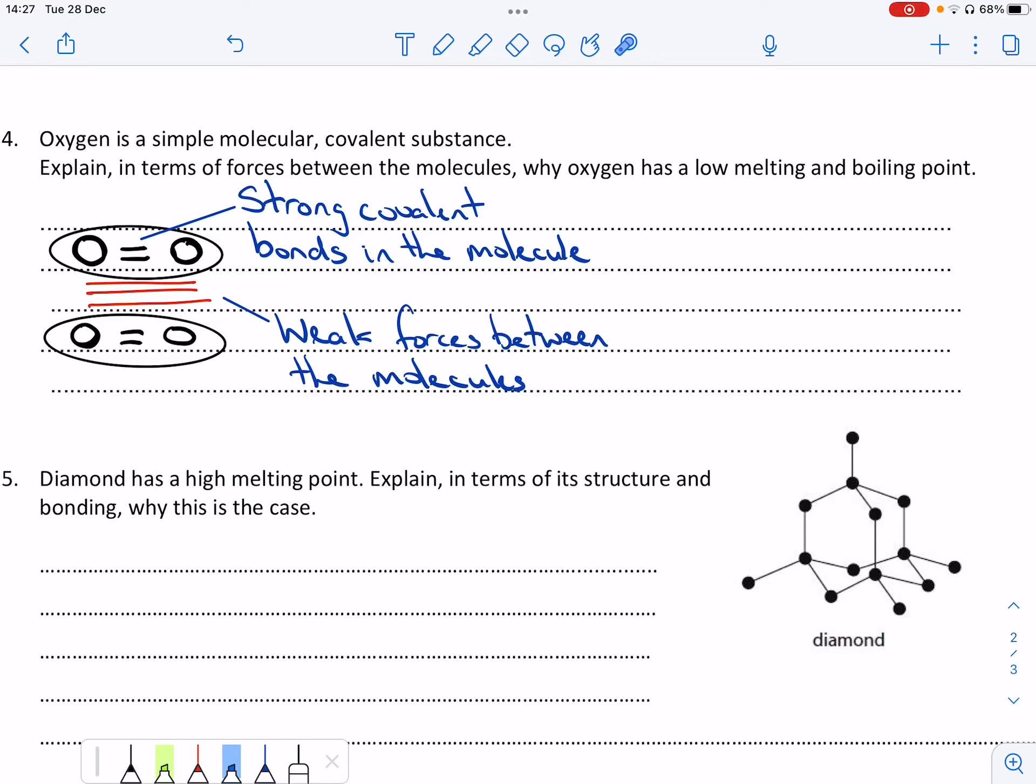Ok, so it tells me that oxygen is a simple molecular covalent substance and it wants me to explain why it has a low melting and boiling point.